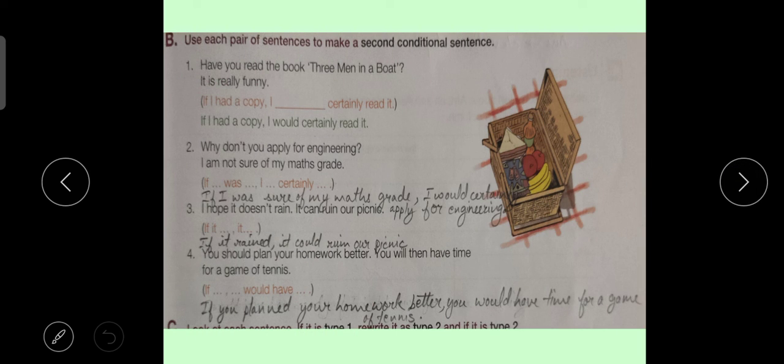Exercise B. Use each pair of sentence to make a second conditional sentence. Here, dear students, we have to make a second conditional sentence. Means a second type of sentence which is showing conditions. Number 1. Have you read the book Three Men in a Boat? It is really funny. Options are also given. They have given us hint. If I had a copy, I dash certainly read it. The next sentence, the second conditional sentence will be If I had a copy, I would certainly read it. See, if I had a copy, I would certainly read it.